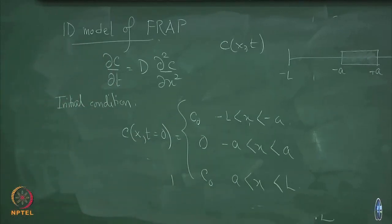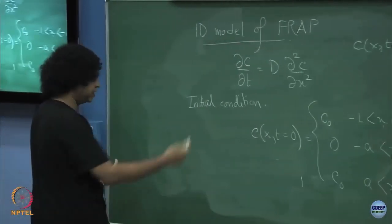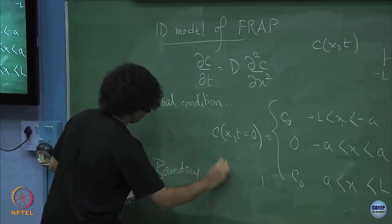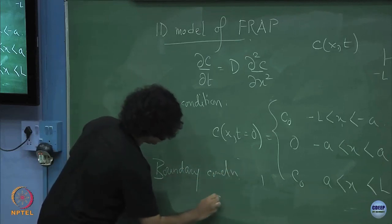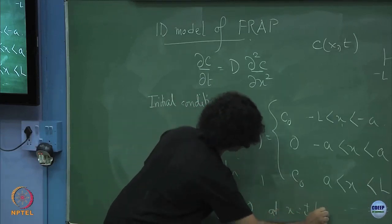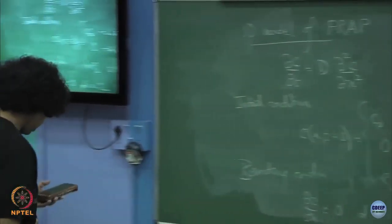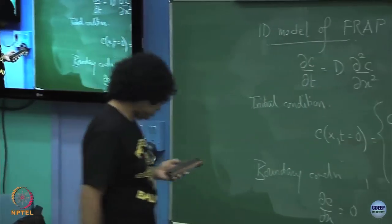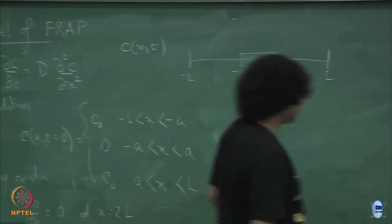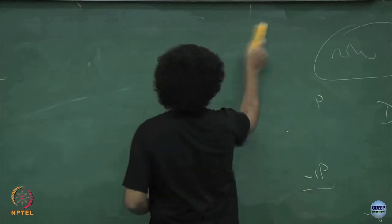This is my initial condition, and let us say I have reflecting boundary conditions — no new things are coming in at the boundaries. So let me put in a reflecting boundary condition, which is del c del x equal to 0 at x equal to plus or minus l. Over here and here I have reflecting boundary conditions, which basically says that no material flows in or out.